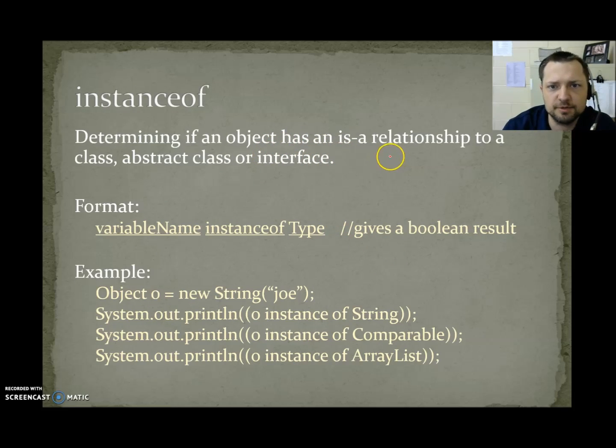Instance of. Determining if an object has an is-a relationship to a class, abstract class, or interface. The format for this command: variable name, instance of, type. It will give you a boolean result. It gives you true when that relationship is valid. O is an instance of string. Yes. O is an instance of comparable. Yes, because a string is also a comparable. O is an instance of ArrayList. No, strings aren't ArrayLists. So, this one would be false.